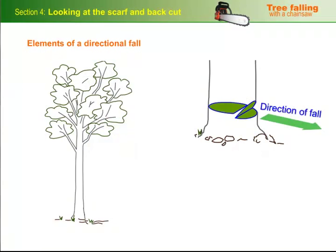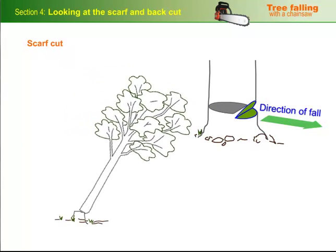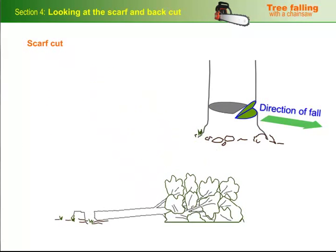Let's have a look at the role each of these elements plays in producing a safe and accurate directional fall. The scarf cut sends the tree in the direction you want it to go in, and breaks the hinge wood at the right time to give you maximum control over the fall.